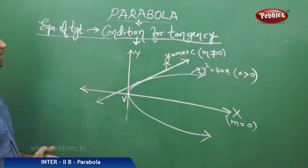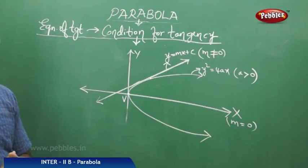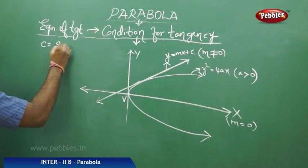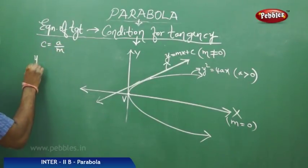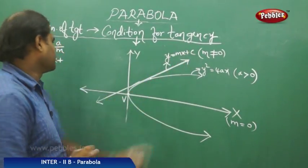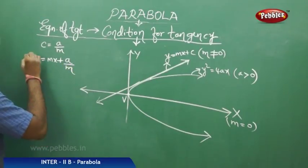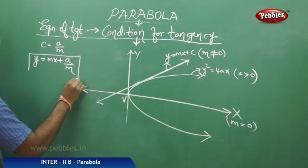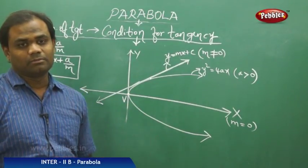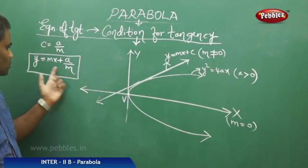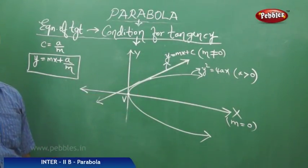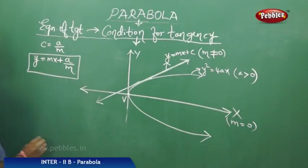Now let's connect the condition for tangency with the equation of tangent. We know that the condition for tangency is c equals a by m. Therefore, when I say y equal to mx plus c is the tangent, c can be replaced with a by m. Therefore, y equal to mx plus a by m is said to be the equation of the tangent of the parabola. So if you know the slope and the value of a, we can construct the tangent for the given parabola.